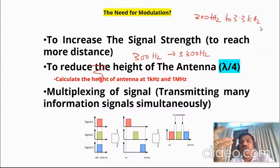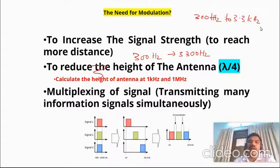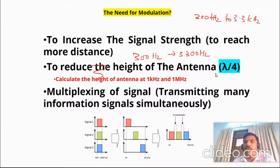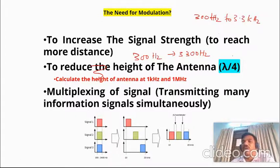So the first function of modulation is to increase the signal strength so as to reach more distance. The next very important function is to reduce the height of the antenna. The height of the antenna should be on the order of lambda by four, where lambda is the wavelength.